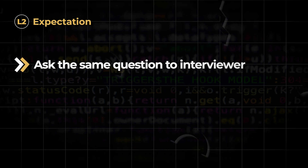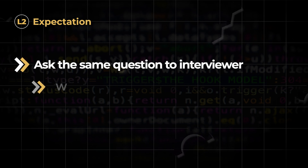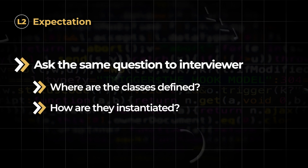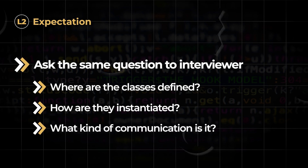For level two, I would expect you to ask questions back to me — like: where are the classes defined? Are they even in the same package? How are they instantiated? Are they instantiated in the same threads? What kind of communication is it — is it bi-directional? I would expect you to talk about synchronization, inter-thread communication techniques, or maybe the observer pattern for having one-to-many notifications.